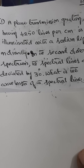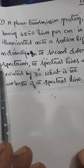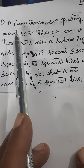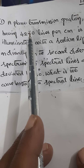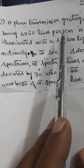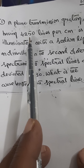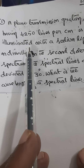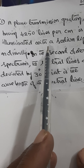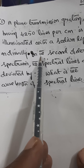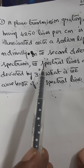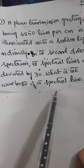Under wave optics, in diffraction, we shall try to solve some of the problems given in university examinations. For example, look at this problem: A plane transmission grating having 4250 lines per centimeter is illuminated with sodium light normally. In the second order spectrum, the spectral lines are deviated by 30 degrees. What is the wavelength of the spectral line?